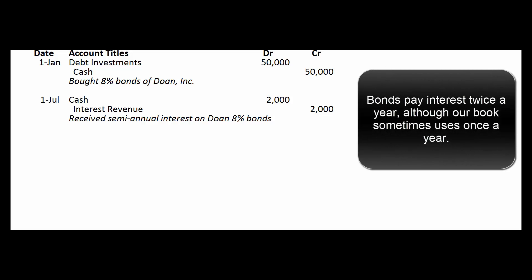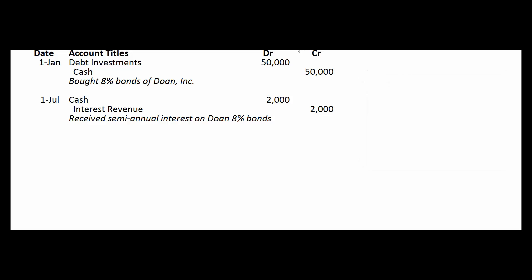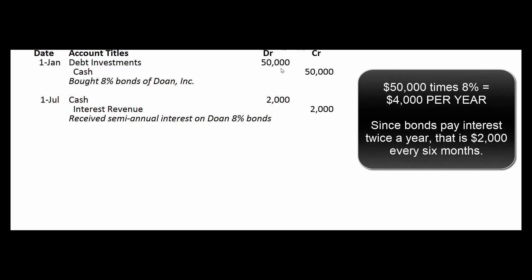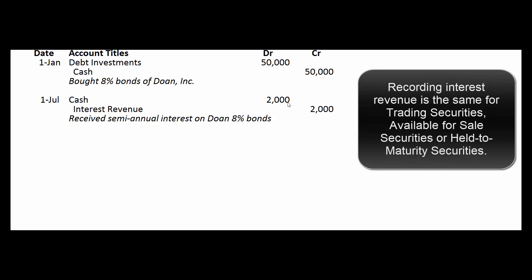Remember, in the real world bonds pay interest twice a year. Let's say this bond pays interest on July 1st and January 1st of every year. $50,000 times 8% equals $4,000 a year, so that's $2,000 every six months. Let's pretend we didn't accrue for any interest revenue in the meantime. So we debit cash for $2,000 — cash is an asset, it increases with debits — and we credit interest revenue for $2,000. Revenues increase with credits.